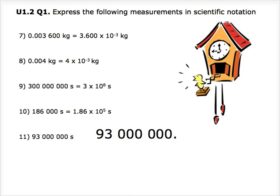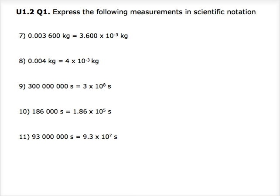And lastly, we have 93 million seconds. We have to move the decimal point seven times to the left, giving us a coefficient of 9.3. Thus, our final answer is 9.3 times 10 to the power of 7.